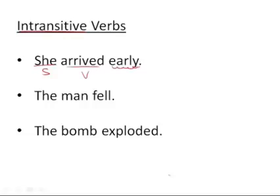Well, we're describing how she arrived. And when we're describing or modifying a verb, we are using an adverb. A direct object has to be a noun. And so here we simply have a verb with an adverb. There is no direct object.